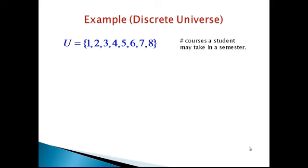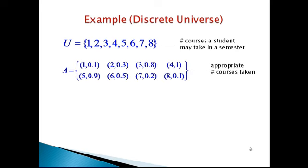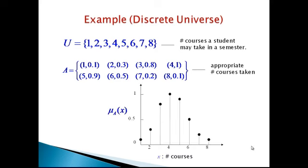A fuzzy set can be represented in a discrete universe. Suppose the universal set U equals {1, 2, 3, 4, 5, 6, 7, 8}, representing courses a student may take in a semester. The membership function A assigns values: 0.1 for 1, 0.3 for 2, 0.8 for 3, and so on up to 0.1 for 8. The diagrammatic representation of the membership function is displayed, with data in a discrete universe.